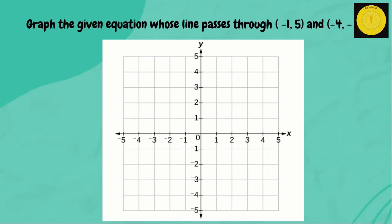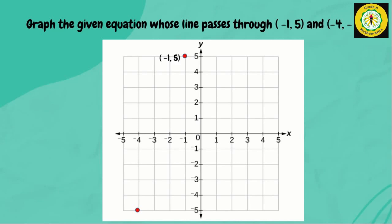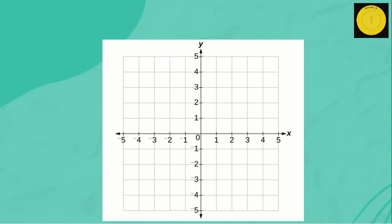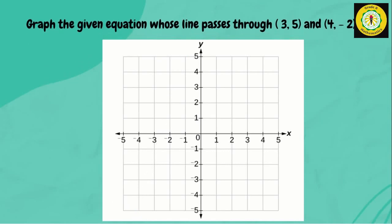Second example: graph the line passing through (negative 1, 5) and (negative 4, negative 5). Plot the points on the coordinate plane. Here are the coordinates of negative 1 and 5, and here are the coordinates of negative 4 and negative 5. Then we connect the points, and remember that linear equations always form a straight line.